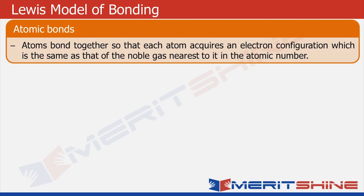So can you tell me how many electrons hydrogen would like to acquire? It has one electron and the nearest noble gas to it is helium, which has two electrons. So hydrogen would acquire one electron.